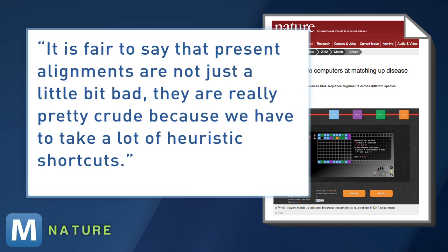Adam Siepel of Cornell University tells Nature, "It is fair to say that present alignments are not just a little bit bad, they are really pretty crude because we have to take a lot of heuristic shortcuts." So far, gamers have produced roughly 350,000 multiple-sequence alignment solutions. Nearly three-quarters of those were better than alignments calculated by a state-of-the-art alignment program at UC Santa Cruz.